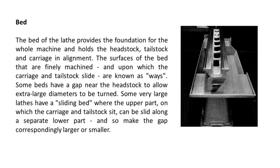Some beds have a gap near the headstock to allow extra large diameters to be turned. Some very large lathes have a sliding bed where the upper part, on which the carriage and tailstock sit, can be slid along a separate lower part, and so make the gap correspondingly larger or smaller.